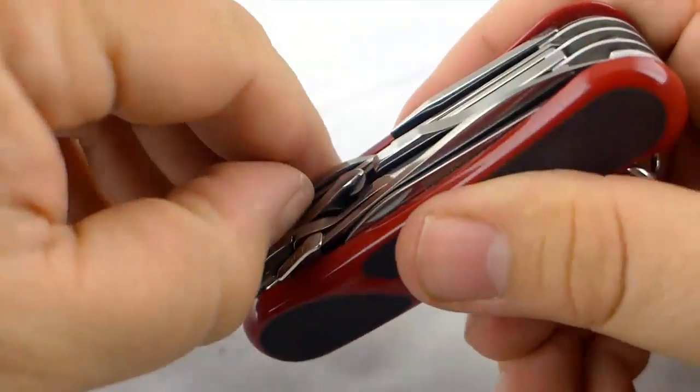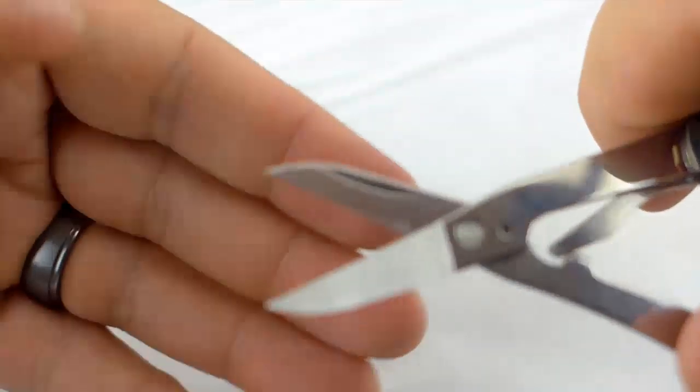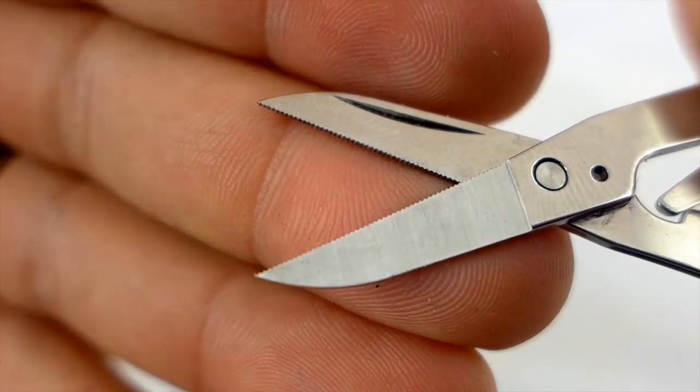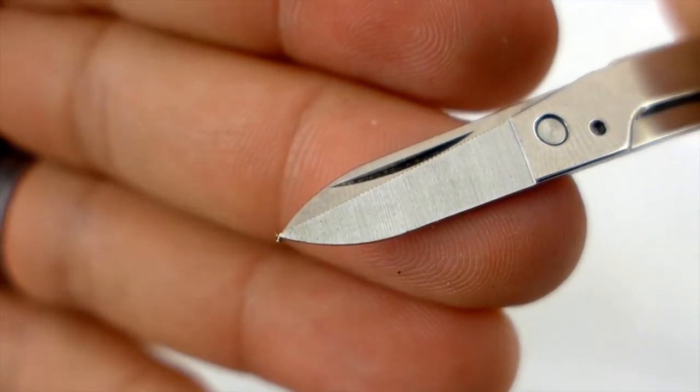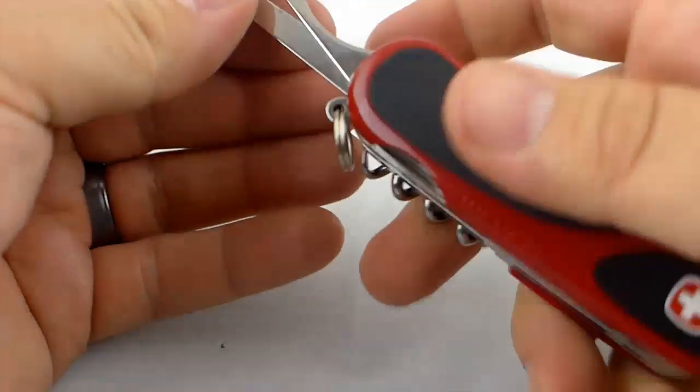After that you've got some serrated scissors. You may be able to see on there. Yes there's very slight serrations. Very small serrations. Same spring Wenger uses on the pliers.